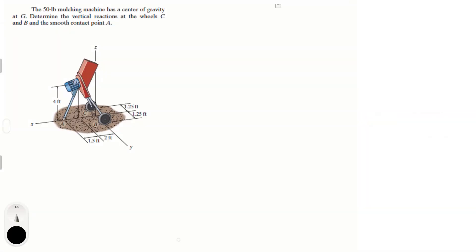Alright guys, let's do this problem that says the 50-pound mulching machine has a center of gravity at G. Determine the vertical reactions at the wheel C, B, and the small contact at point A. This problem is actually kind of short, so let's get to it.